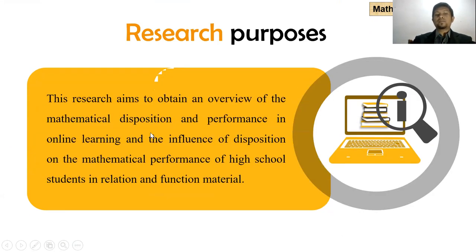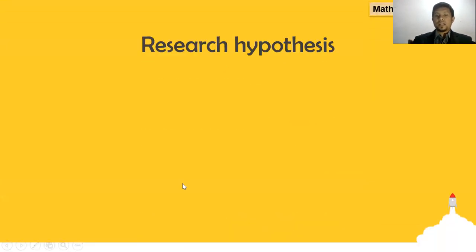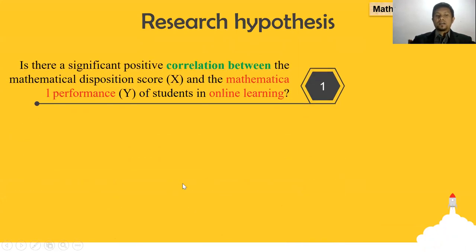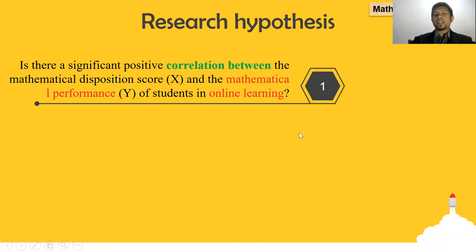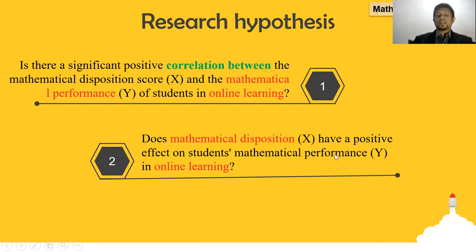This research aims to obtain an overview of mathematical disposition and performance in online learning, and the influence of disposition on the mathematical performance of high school students in relation and function material. The first hypothesis: is there a significant positive correlation between the mathematical disposition score X and the mathematical performance of students Y in online learning? The second hypothesis: does mathematical disposition X have a positive effect on student mathematical performance Y in online learning?